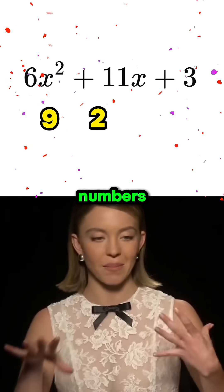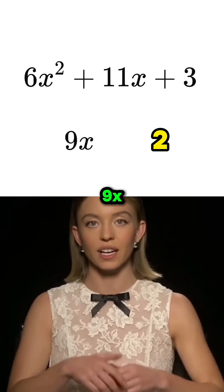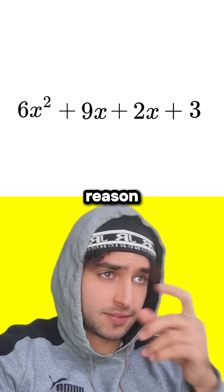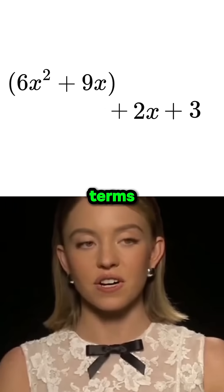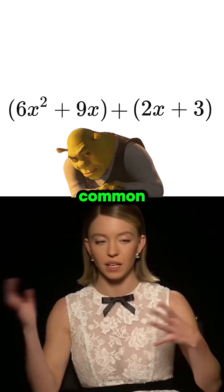So now we've found our two numbers. The next step is to rewrite our 11x as 9x plus 2x. And what's the reason for doing that? Because if we simplify these two terms and then these two, we might find they have a little something in common.